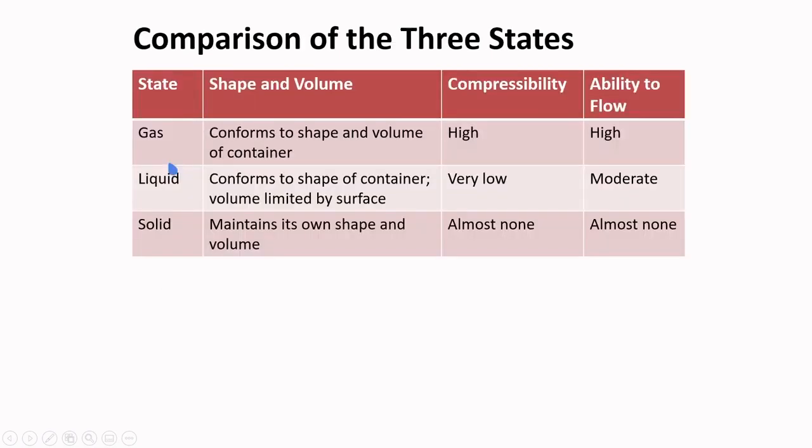Here are comparisons of the three states of matter. The gas conforms to the shape and volume of the container. They are highly compressible and has a high ability to flow. Liquids conform to the shape of the container and the volume is limited by the surface. Their compressibility is very low and their ability to flow is moderate compared to the gas.